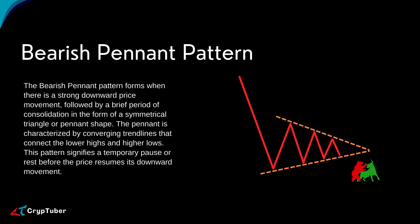The bearish pennant pattern forms when there is a strong downward price movement, followed by a brief period of consolidation in the form of a symmetrical triangle or pennant shape. The pennant is characterized by converging trend lines that connect the lower highs and higher lows. This pattern signifies a temporary pause or rest before the price resumes its downward movement.